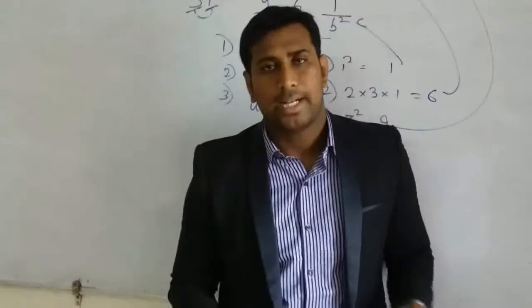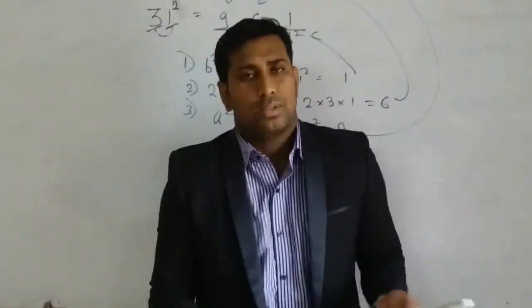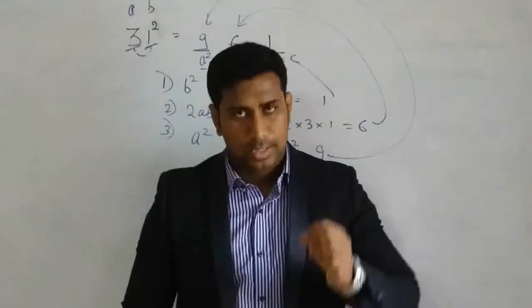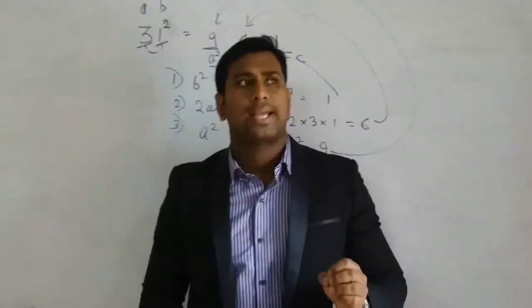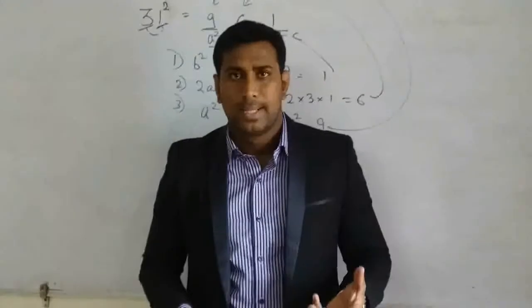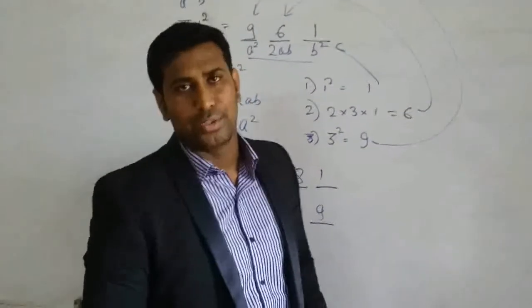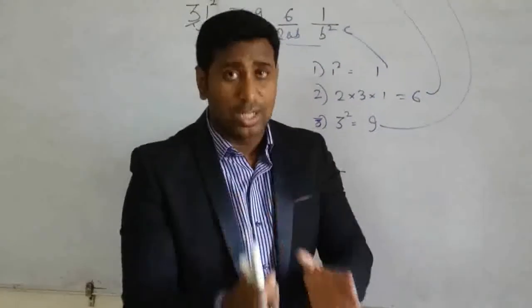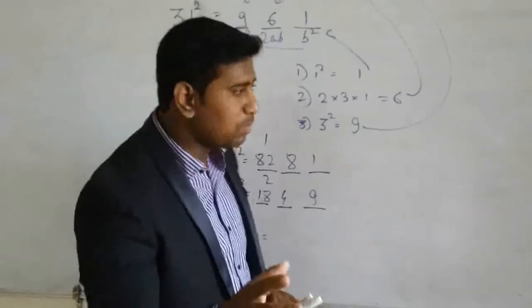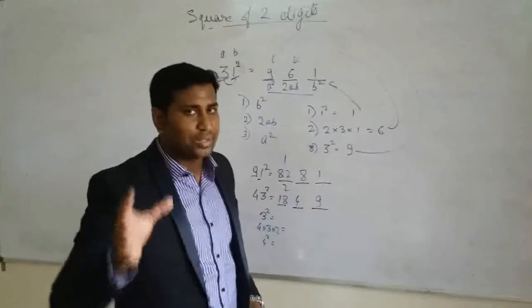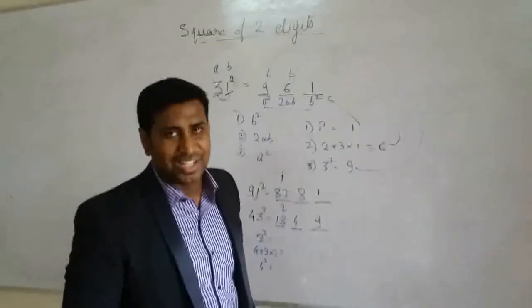So we can see that we can solve it in very small seconds, very few seconds only. So by this, just do one thing. Whenever you are getting a question by squaring a two digit number, do this trick and you will get the answer in 3 to 4 seconds only. And practice it regularly my dear friends. Because without practice you cannot remember this trick. Practice it more and more so you can remember this trick very easy.